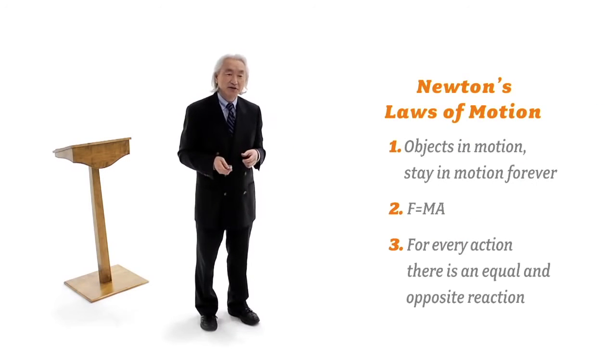They didn't build scale models of the thing. You couldn't have an Empire State Building that big to test whether it's going to fall or not. How did they know ahead of time that that building wouldn't fall? And the answer is Newton's laws of motion.